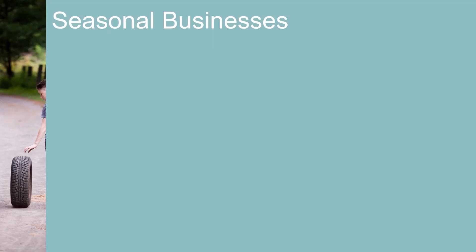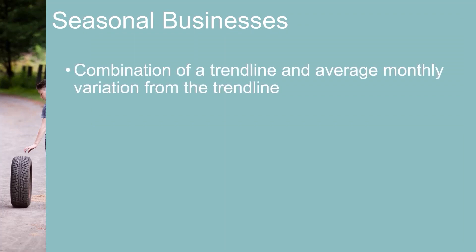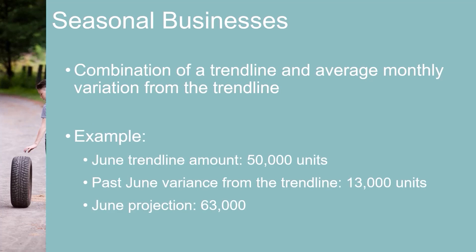Seasonal businesses will need to incorporate seasonality — they can't just follow a trend line. In this case, changes in a driver may be best calculated as a combination of the trend line plus the average variance by month from that trend line. For example, assume the simple linear trend line amount for June in the forecast period is 50,000 units. Actual June amounts for the past two years have been 13,000 units above the trend line and you expect this to continue. Your forecasted amount for June would then be 50,000 plus 13,000, which equals 63,000. You would repeat this for each month in the projection.